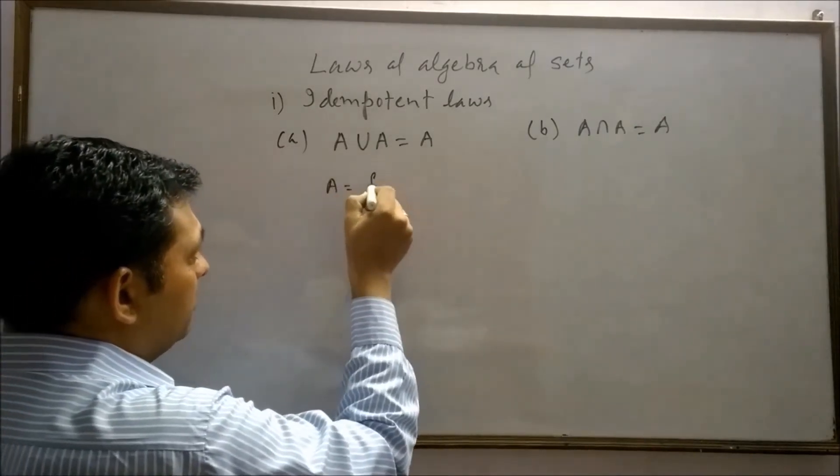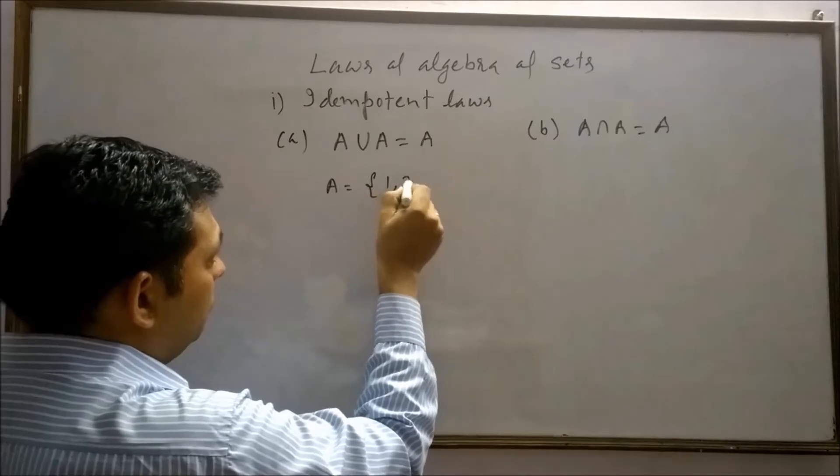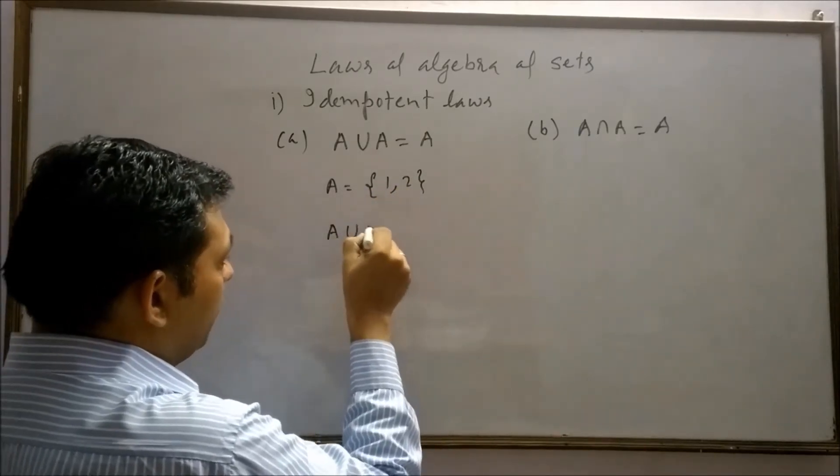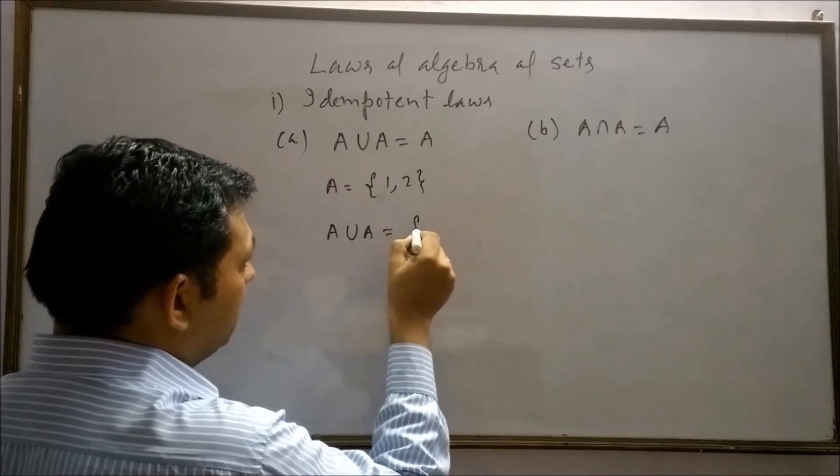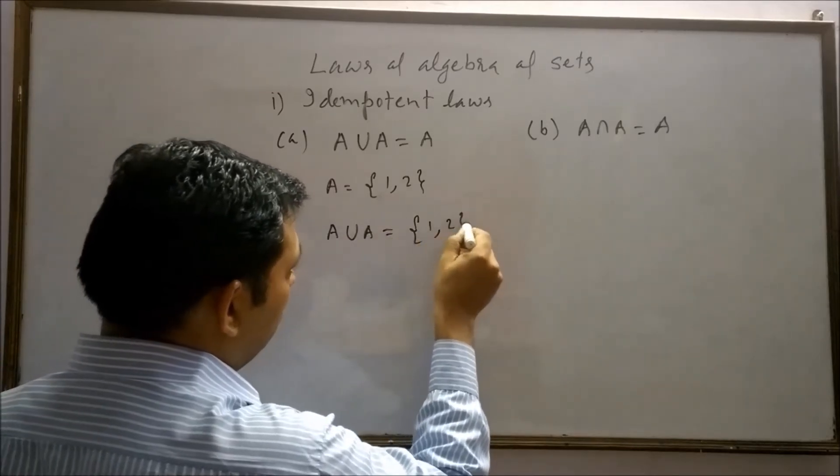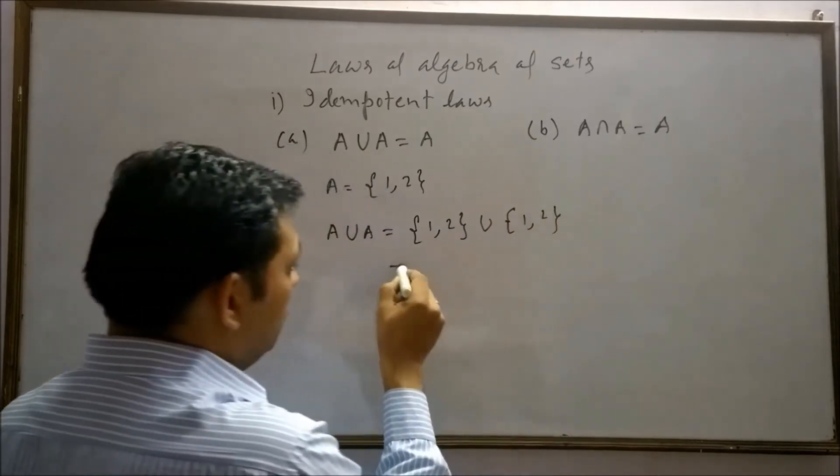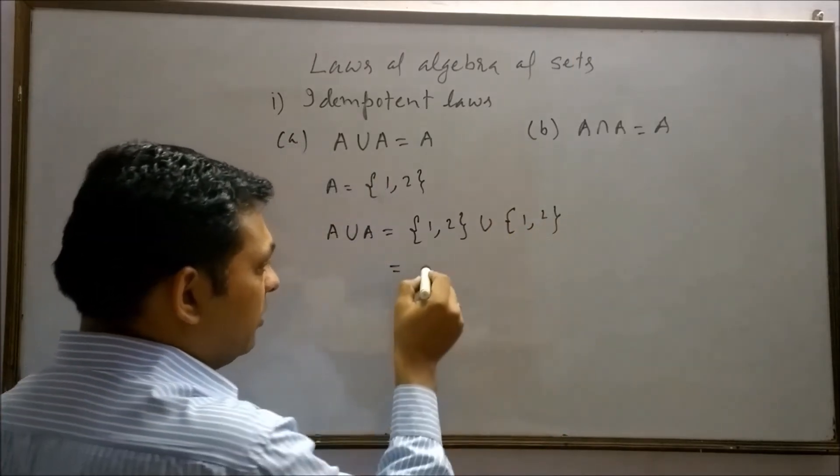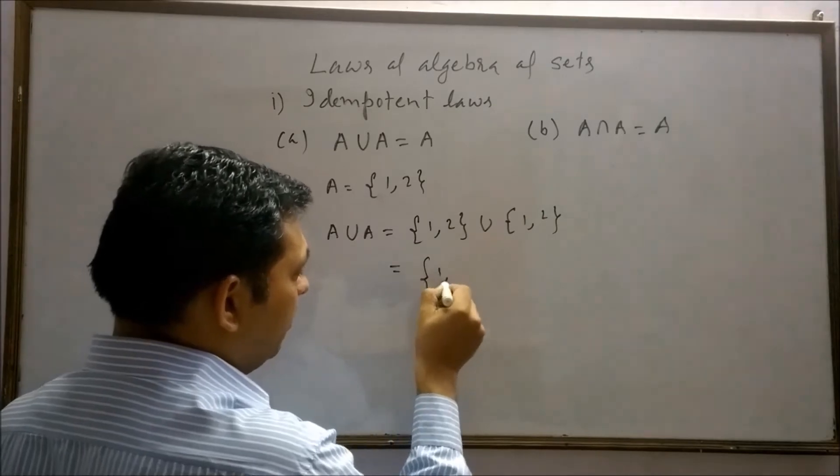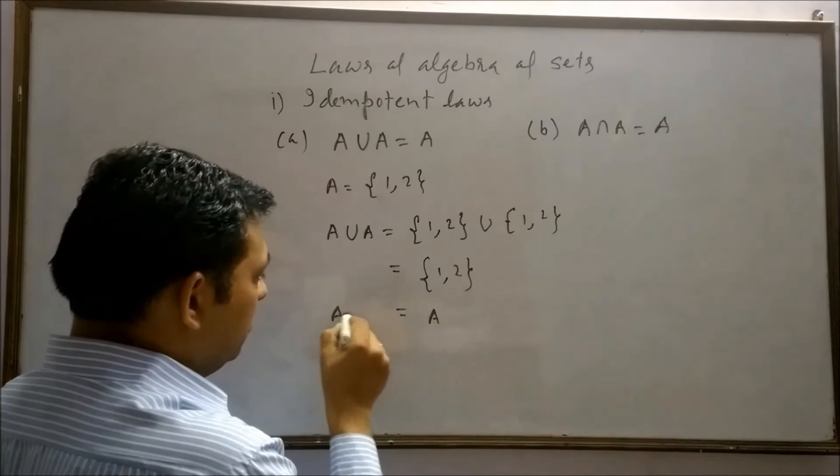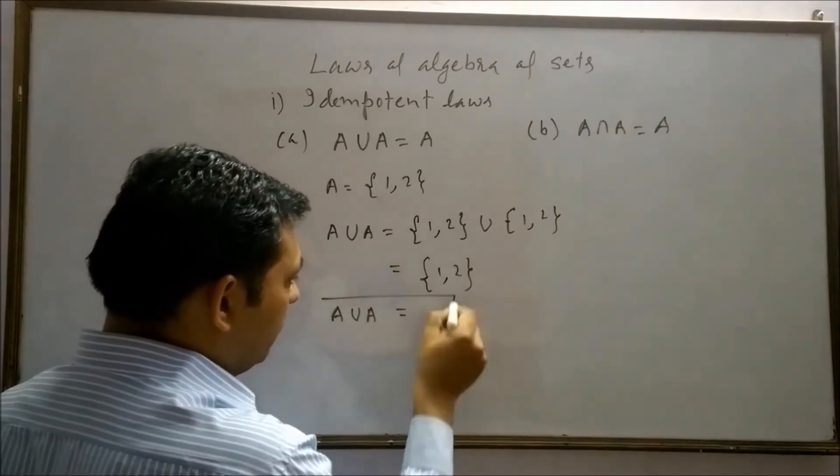Suppose A is the first two natural numbers, 1 and 2. Therefore, A union A can be written as {1, 2} union {1, 2}. If we combine these sets, we get the same set {1, 2}, that is A. It means A union A is always A.